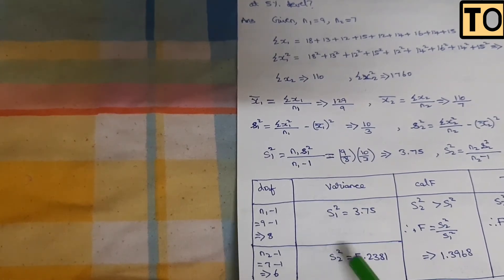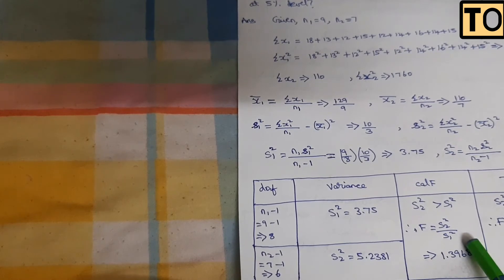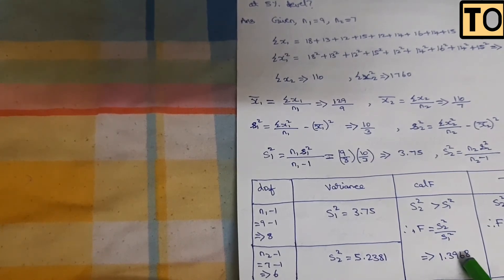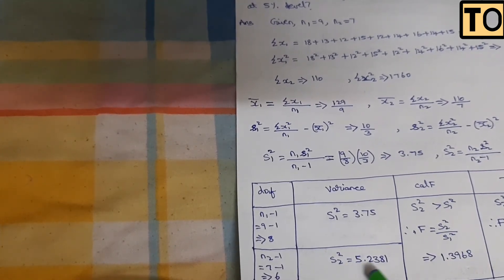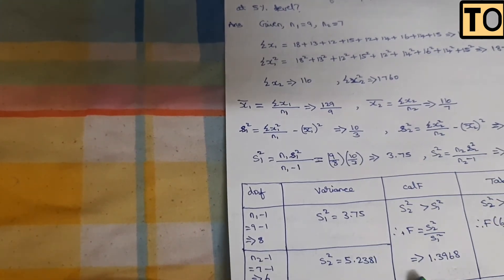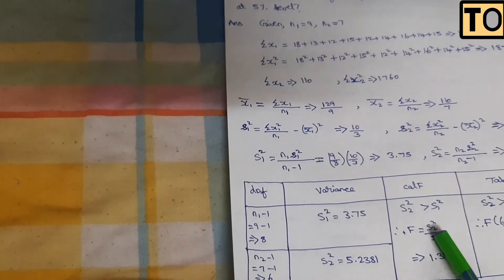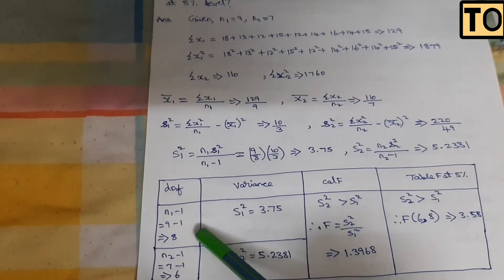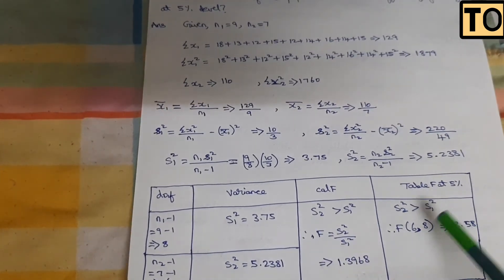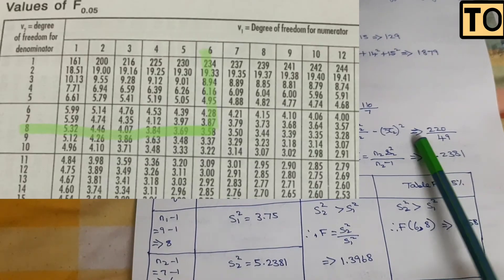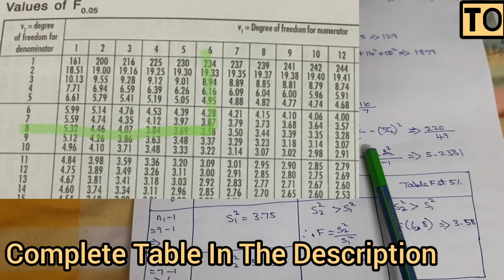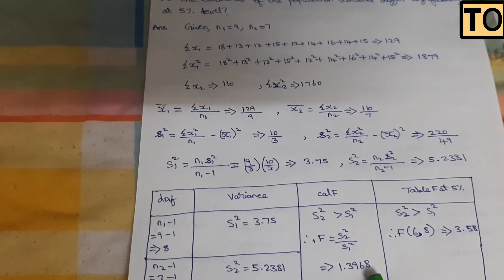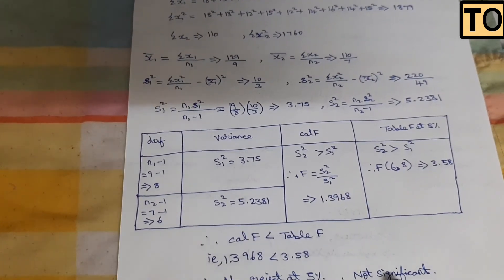S1 squared is divided by S2 squared — that is the denominator. Dividing this value gives 1.3968, that is 5.23 divided by 3.75. The tabulated value at degrees of freedom 6 and 8 is 3.58. Since 1.3968 is less than 3.58, that is the calculated value, we check whether H0 is rejected at the 5% level of significance.